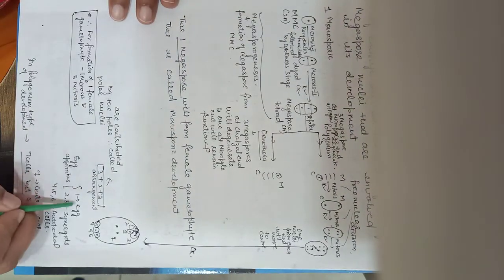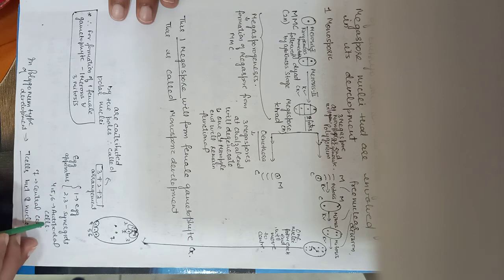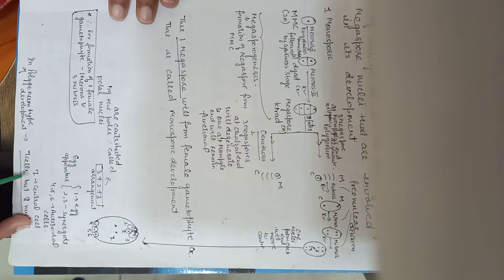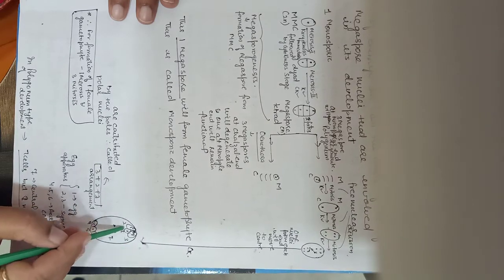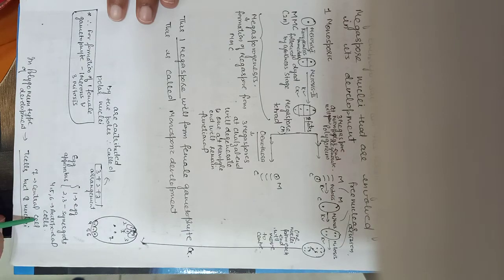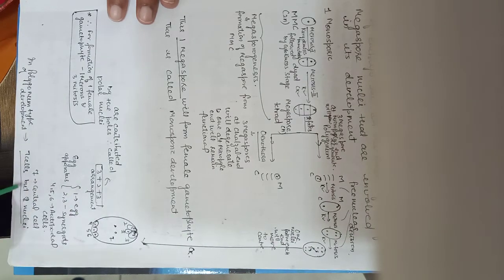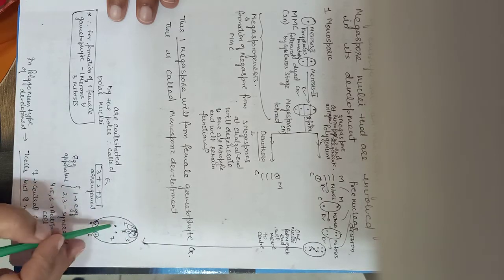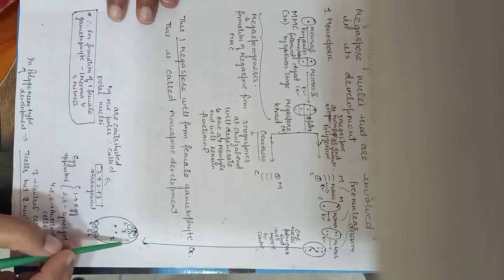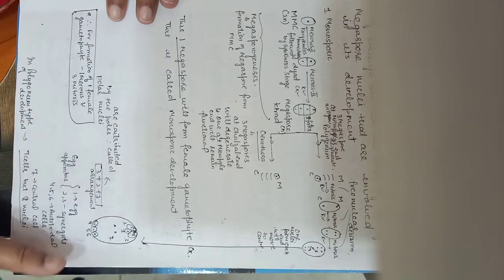The egg apparatus has one egg, and synergids 2 and 3. Cells 4, 5, and 6 are antipodal cells. The seventh, the whole remaining cell, is the central cell, which has two polar nuclei. So there are a total of seven cells and eight nuclei. This is the structure of the female gametophyte or embryo sac.